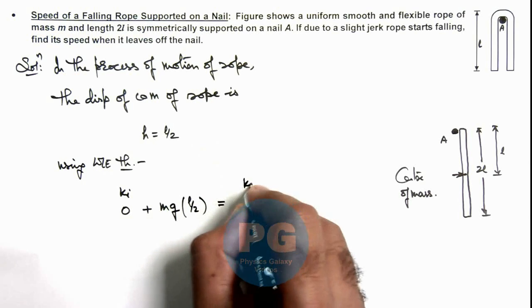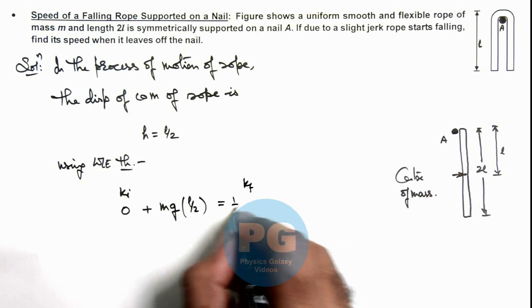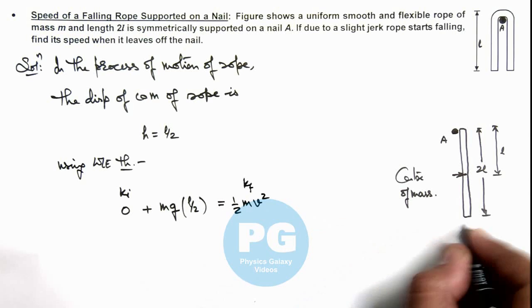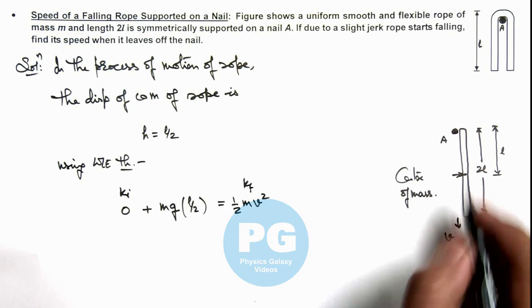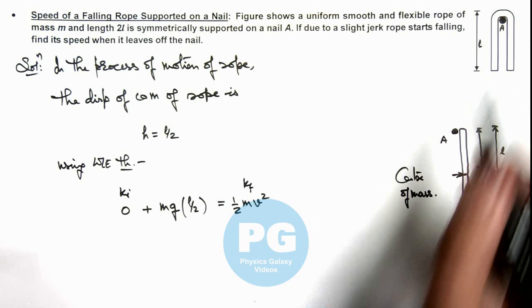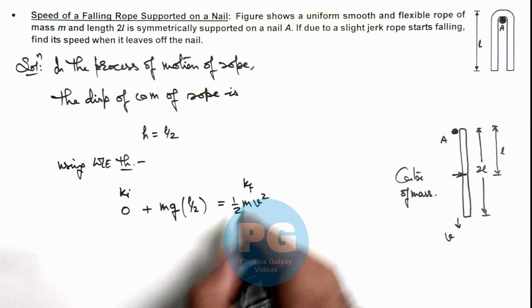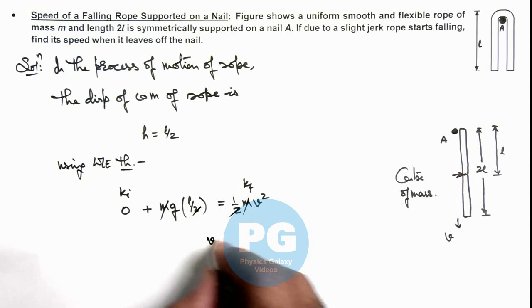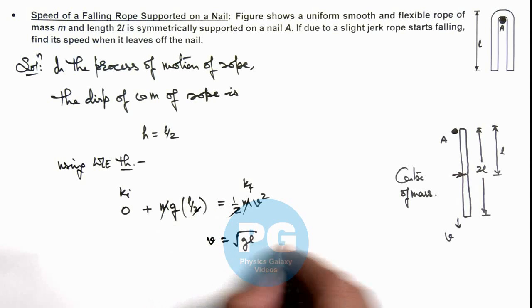This must equal the final kinetic energy, which is (1/2)mv², where v is the speed attained by the rope as from the initial moment it was starting from rest. So m gets cancelled out, the 2 gets cancelled out, and the value of speed we get is √(gl). That will be the final answer for this problem.